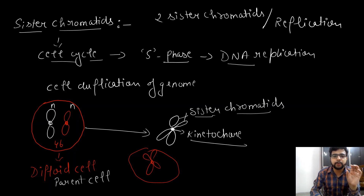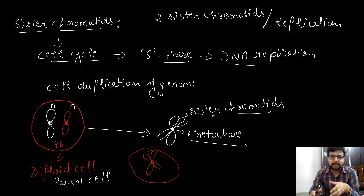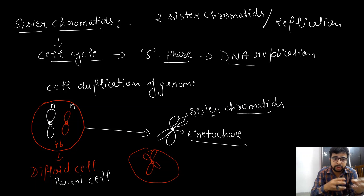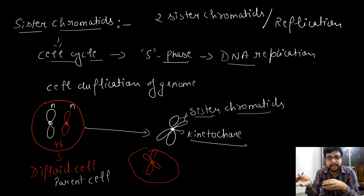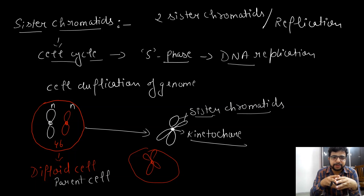That is the simplest way to remember sister chromatids — they are the product of DNA replication. When the cell undergoes M phase, either mitosis or meiosis, they will separate accordingly. In mitosis, it is an equational division, so the number of chromosomes remains the same in the diploid parent and diploid daughter cells. In meiosis, reduction division takes place and haploid cells are formed. That's all about sister chromatids — I hope you enjoyed the video, thank you for watching.